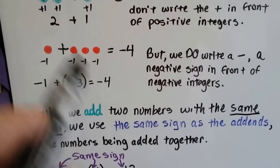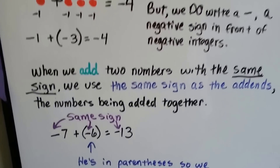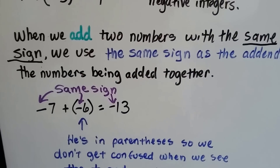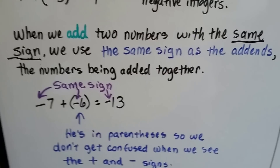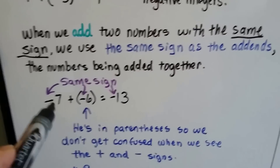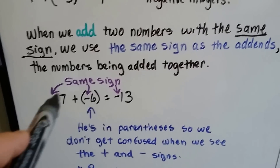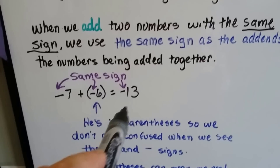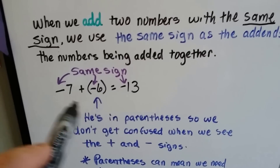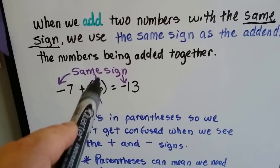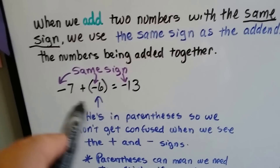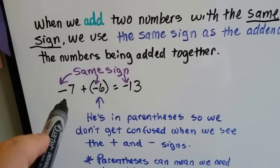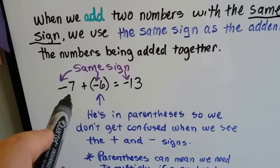We've got four red chips. When we add two numbers with the same sign, we use the same sign as the addends. Remember, the addends are what we add together, and then that's the sum. So when we're adding two numbers that have the same sign, we use the sign of the addends.